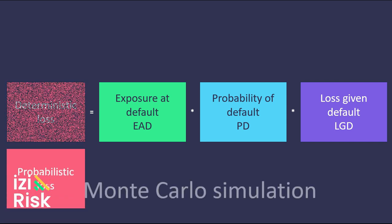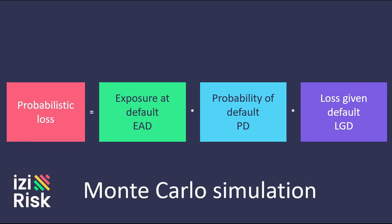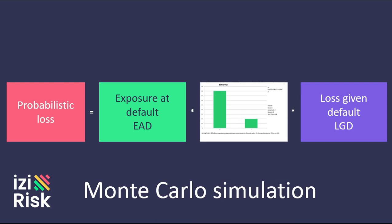To turn this deterministic loss into a probabilistic or stochastic one is where Monte Carlo simulation is required. The probability of default is replaced by a binary distribution of default, the magnitude of which depends on such probability factor. Thus, during a simulation, x percent of the time a default is generated, and 1 minus x percent of the time, no default is generated.